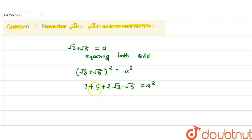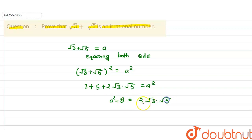Since 5 + 3 = 8, we take 8 to the right-hand side, giving us 2√3·√5 = a² − 8. Dividing both sides by 2, we get (a² − 8)/2 = √15.